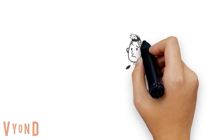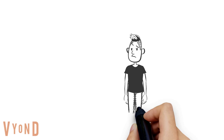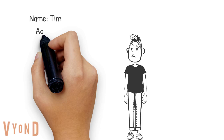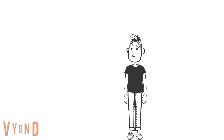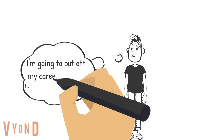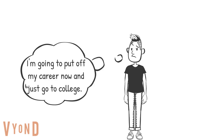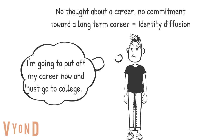To help explain these, let's take Tim, who is an 18-year-old college student. He is in the identity versus role confusion stage of Erikson's theory. One of the big identity changes made during this stage is finding a career or occupation. If Tim hasn't really thought about a career, hasn't made any commitments, and is just putting it off, that would be an example of identity diffusion.